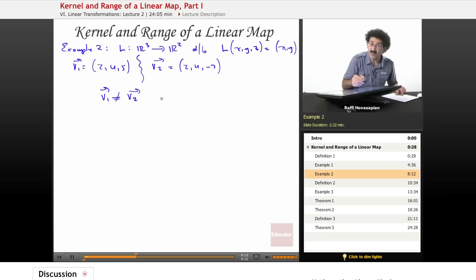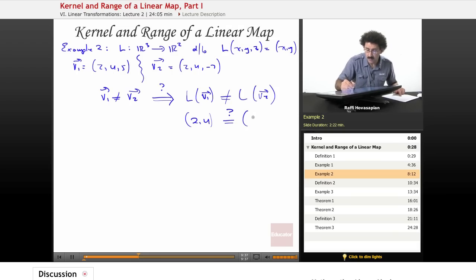However, let's see if this implies, question, does it imply that L(V1) does not equal L(V2)? Well, L(V1) is (2, 4). If I take (2, 4, 5), I take the first two. The question, does it equal (2, 4), which is the L(V2)? Yes, I take that one and that one for V2, (2, 4). (2, 4) equals (2, 4). So therefore, this implication is not true. I started off with two different vectors, yet I ended up mapping to the same vector in R².